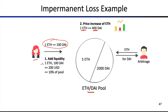Now Bob comes and he's performing arbitrage, because in the liquidity pool the liquidity was rather unbalanced. So he's balancing it out, and now there are five ETH and 2000 DAI remaining in this pool.